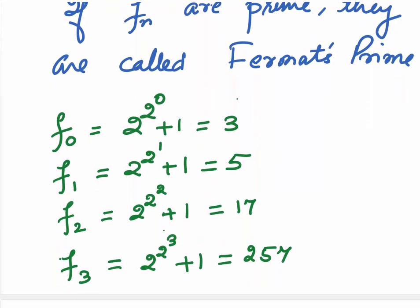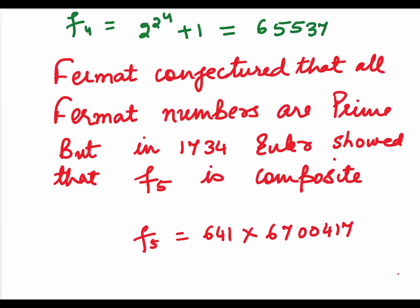Now, you can check if you take n to be 0, we get F0 as 3. If we take n to be 1, we get F1 as 5. If we take n to be 2, we get F2 as 17. If n is 3, we get F3 as 257. And if n is equal to 4, F4 is 2 to the power 2 to the power 4 plus 1, which is 65537.